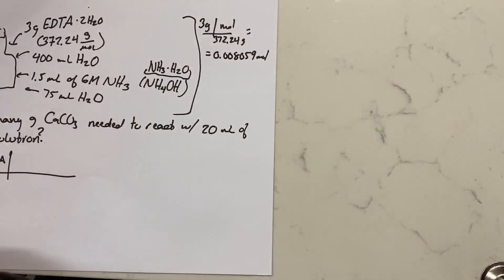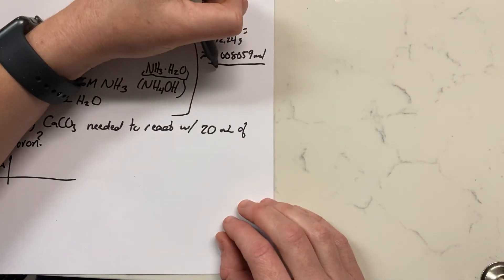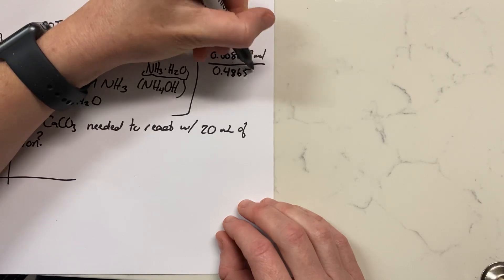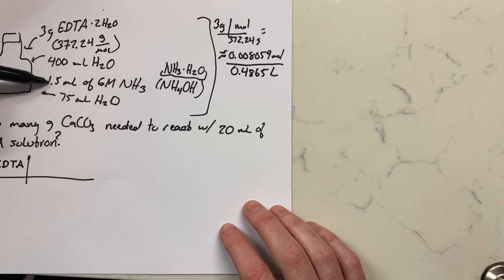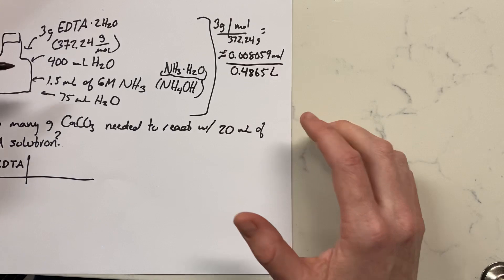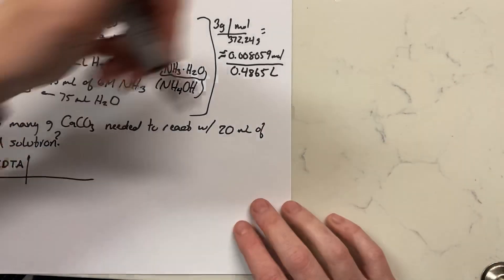And we also know how many liters there were because we added roughly 500. To be a little more specific, we added 0.4865 liters, from the 1.5 milliliters here, 75 milliliters, the 400 milliliters. Obviously this is a really rough estimate; we could have just as easily put about 500 milliliters.